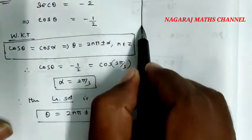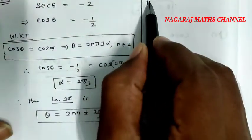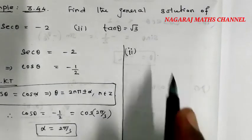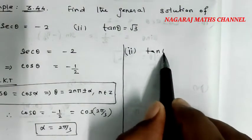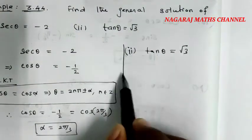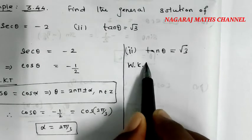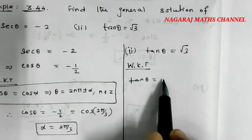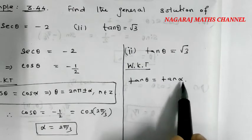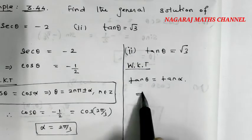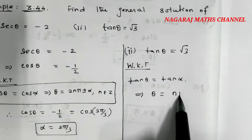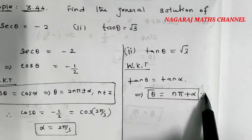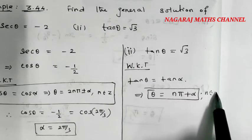That is the first part. Question number 2: tan θ equals root 3. We know that tan θ equals tan α gives θ equals nπ plus α. This is the general solution where n belongs to Z.